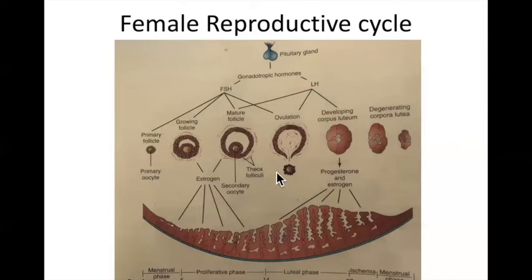Once that thing ruptures, the follicle then transforms into this other structure known as the corpus luteum. The corpus luteum is glandular tissue. This glandular tissue produces estrogen and progesterone, which maintains the wall of the uterus in the event that the egg wants to implant.